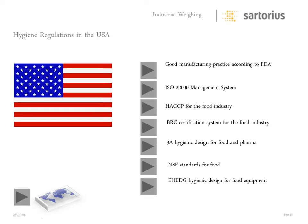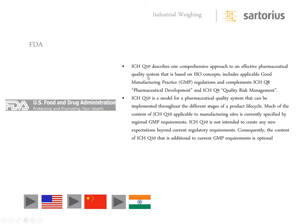The FDA — that's ICH Q10 — describes one comprehensive approach to an effective pharmaceutical quality system. Note the word 'quality system' — that's a term we'll be coming back to over and over. Quality systems are employed in ISO certifications such as 17025 and the 9000 series for manufacturing. Quality systems are all about accountability, having a plan, and sticking to it. They include applicable GMP regulations and complement ICH Q8 and Q9 risk managements.